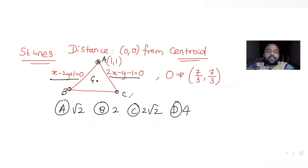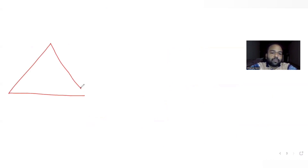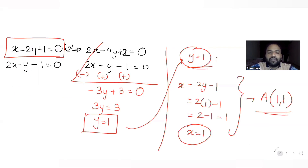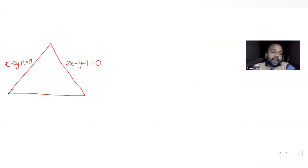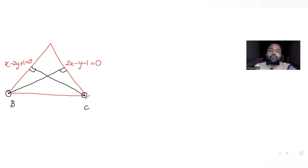Now let's find coordinates of B and C. I'll draw the triangle. I have the first equation x - 2y + 1 = 0 and the second equation 2x - y - 1 = 0. To find the remaining two vertices B and C, I'll use the idea of the orthocenter. The orthocenter is given as (7/3, 7/3), which is the intersection of the altitudes drawn through B and C.